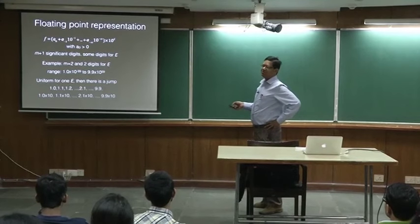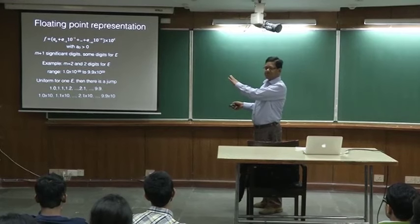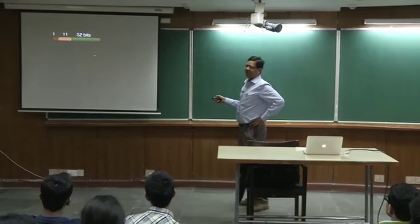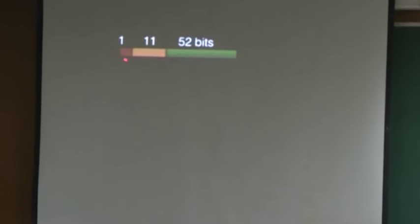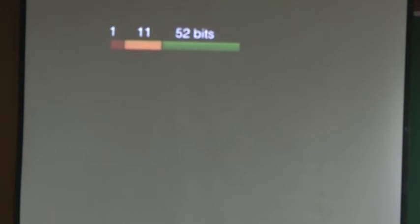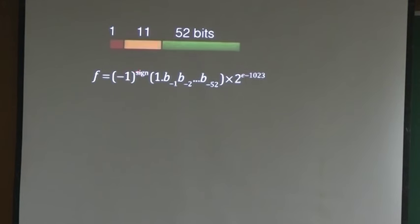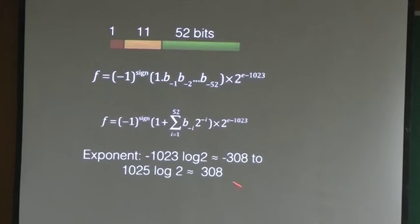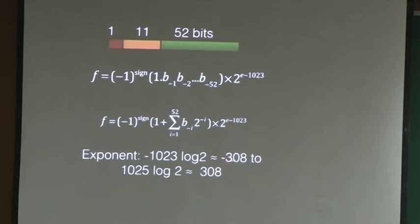In the computer, how do you represent the real decimal number? Instead of base 10, you replace by 2 - that is binary. For double precision: 1 bit for sign, 11 bits for the exponent, and 52 bits for precision - the decimal number. If the sign bit is 0 it is positive, 1 is negative. This is b minus 1 to minus 52 for 52 bits. The exponent: whatever number is here you subtract 1023, which gives you negative as well as positive exponents. You can go from exponent minus 308 to 308, which is a big number.